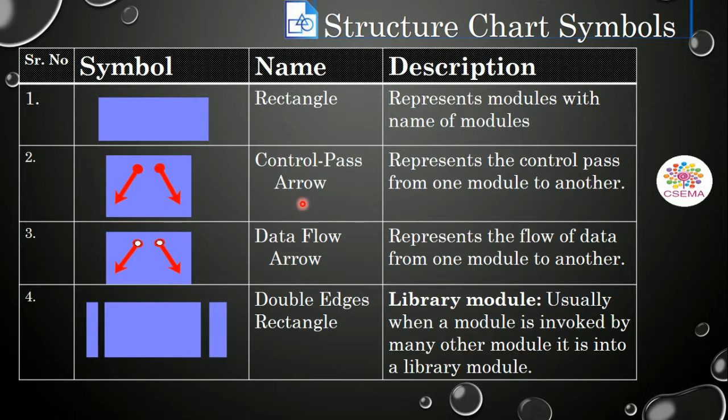And the third symbol is the data flow arrow. Data flow arrow is used to represent the flow of data from one module to another module in the software system.